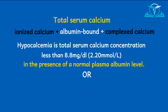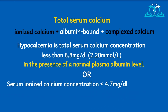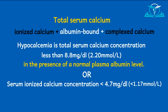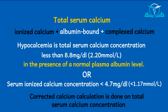In terms of serum ionized calcium level, hypocalcemia can be defined as a serum ionized calcium concentration less than 4.7 mg per deciliter, or less than 1.17 millimoles per liter. You should note that corrected calcium concentration is done on only the total serum calcium, not the serum ionized calcium.